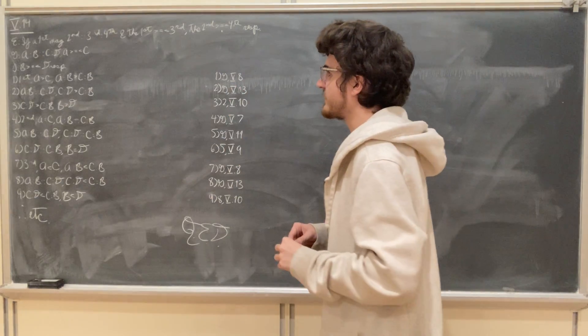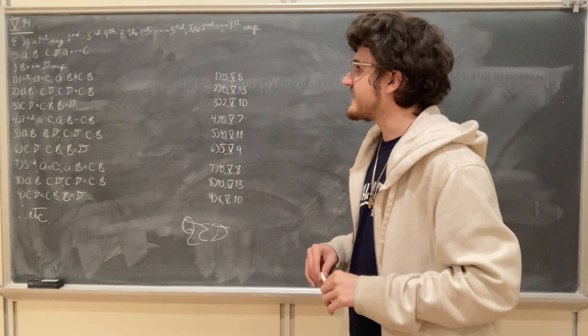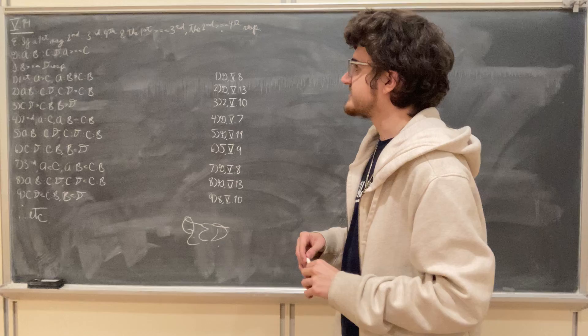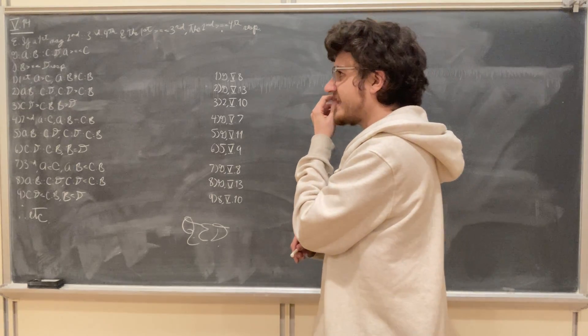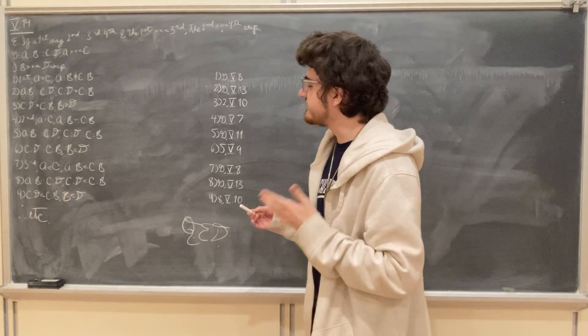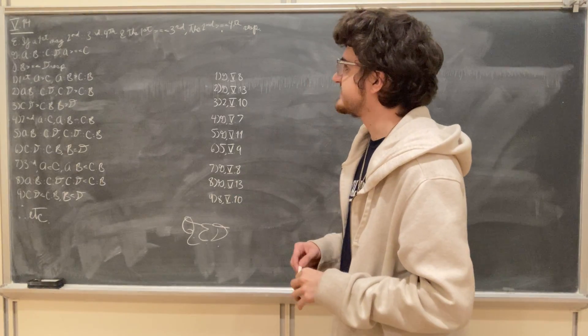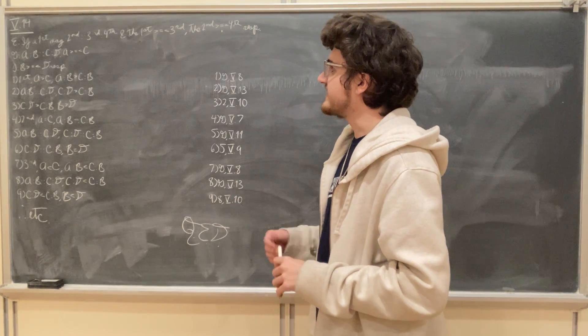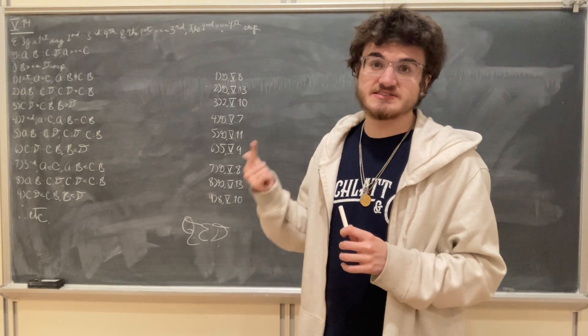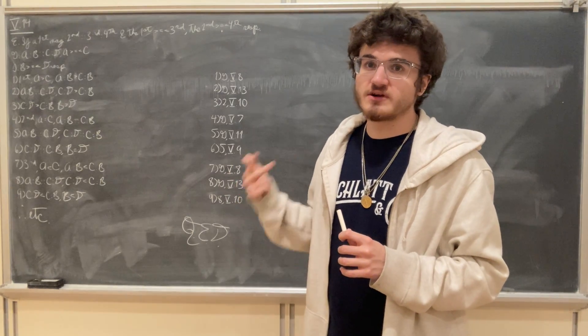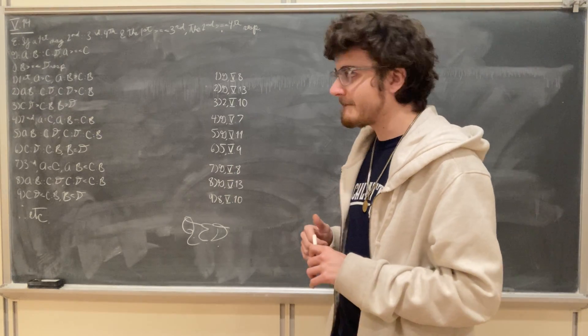What we're given is the proportion a is to b just as c is to d, and a has one of three relationships to c: a is either greater than c, it is equal to c, or it's less than c.